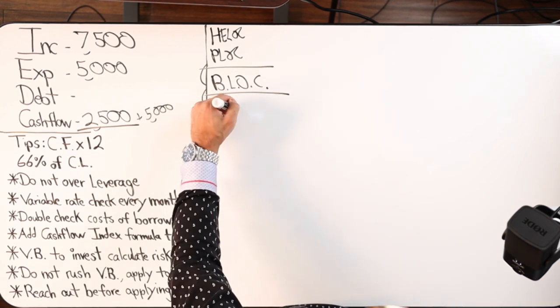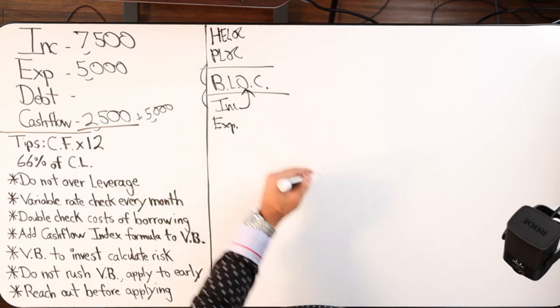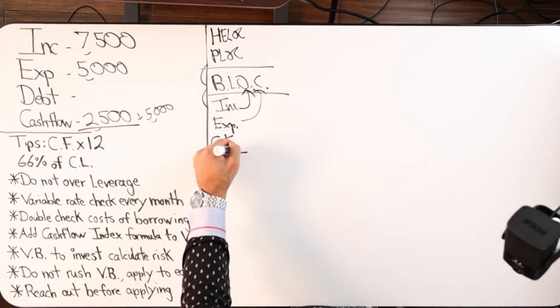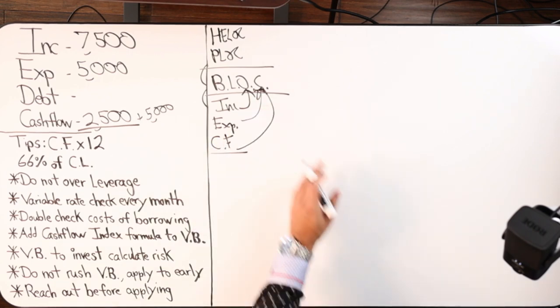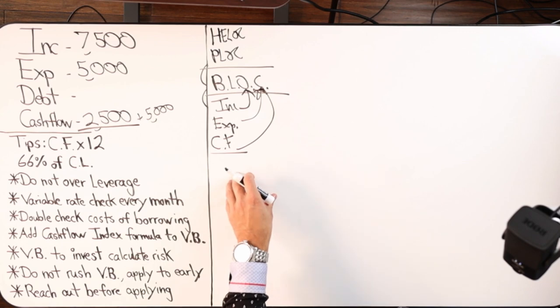Again, your income from the business goes into the business line of credit. Expenses come out of the business line of credit. Your cash flow stays in the business line of credit instead of staying in a business checking account doing nothing.